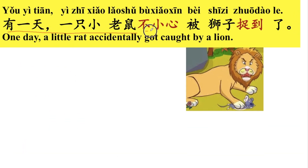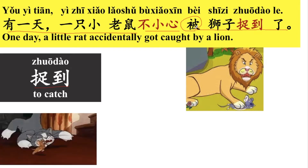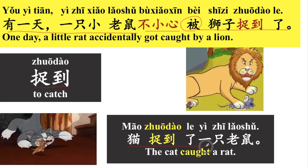有一天，一只小老鼠不小心被狮子捉到了。捉到 means to catch. 被 indicates a passive structure — 被狮子捉到了. For example: 猫捉到了一只老鼠 — The cat caught a rat. Using 被: 一只老鼠被猫捉到了 — A rat got caught by a cat.